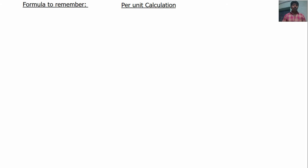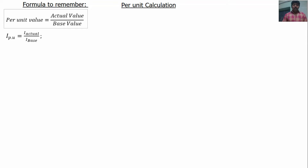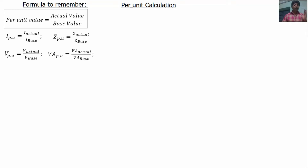First, the formulas. The first formula: per unit value means the ratio of actual value to base value. In the power system, a base value is defined. Current in per unit is equal to actual current value divided by base current value. Similarly, impedance in per unit equals actual impedance divided by base impedance. Voltage in per unit equals actual voltage divided by base voltage. VA per unit equals actual VA divided by base VA power.